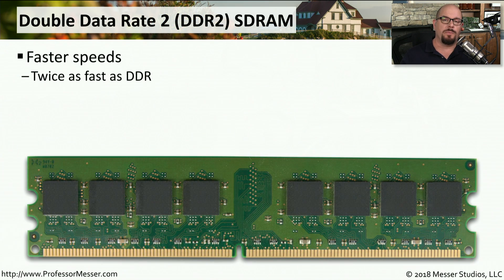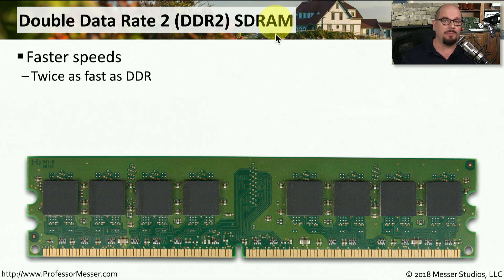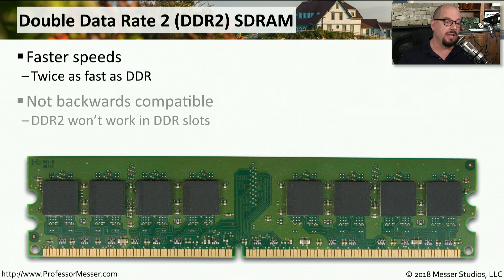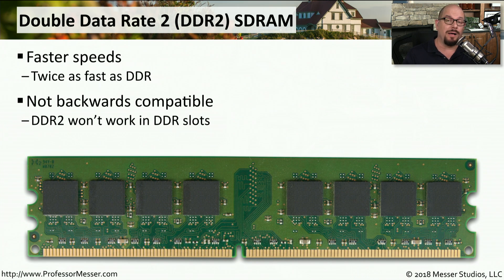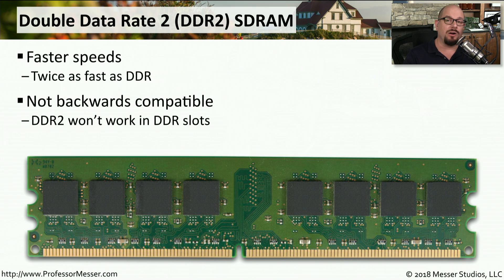In older computer systems, you might find double data rate generation 2, or DDR2 SDRAM. These are memory modules that were faster than the original double data rate memory modules, and they're not backwards compatible with those — in fact, they're not forward compatible either. If you have a computer system that requires DDR2, then you must use a DDR2 module in that system. You're not able to replace it with a DDR, a DDR3, or a DDR4.